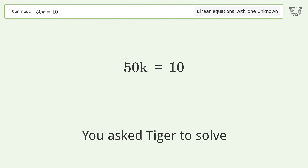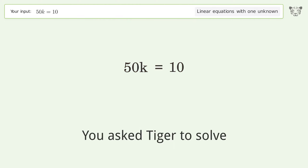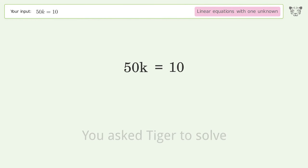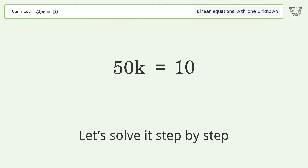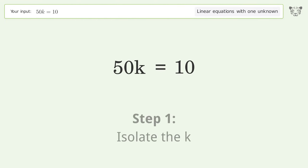You asked Tiger to solve this — it deals with linear equations with one unknown. The final result is k equals one over five. Let's solve it step by step and isolate k.